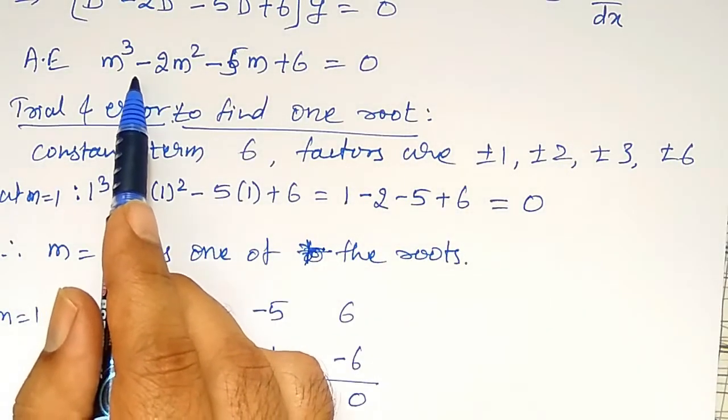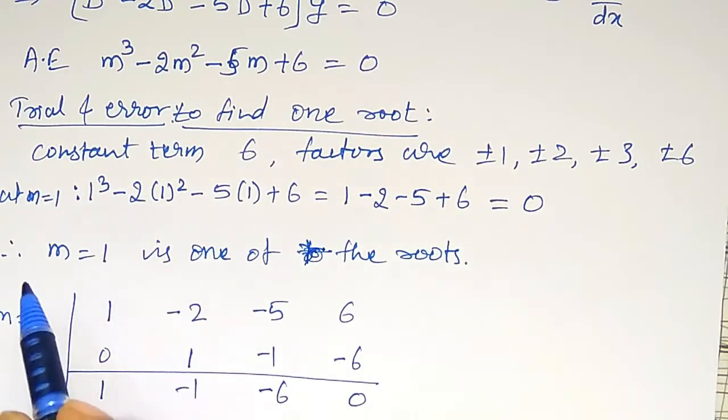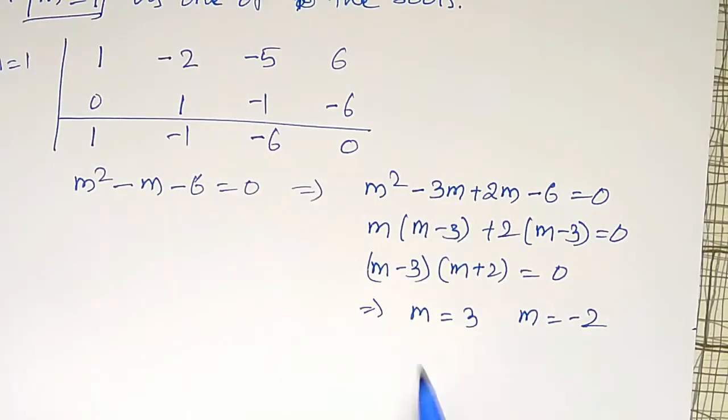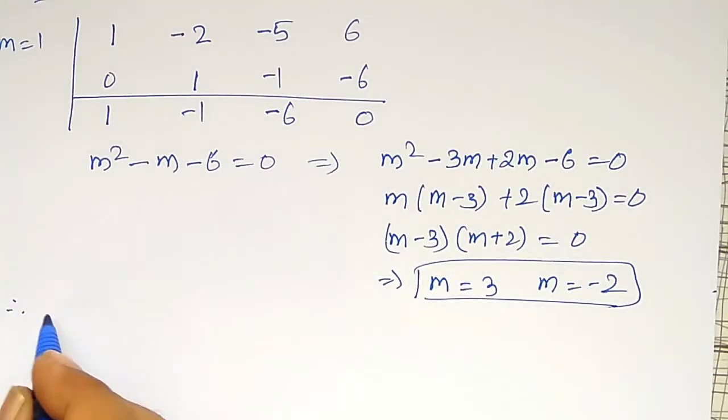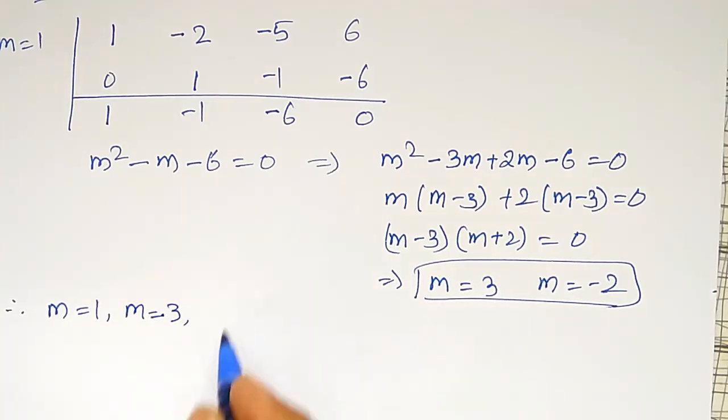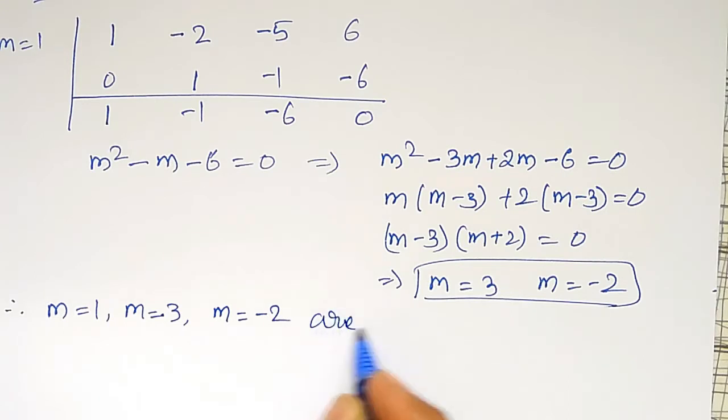But I want roots of this three, m³. Already, m equal to 1, one root is there. Other two roots are this. Therefore, m equal to 1, m equal to 3, and m equal to minus 2 are the three roots.